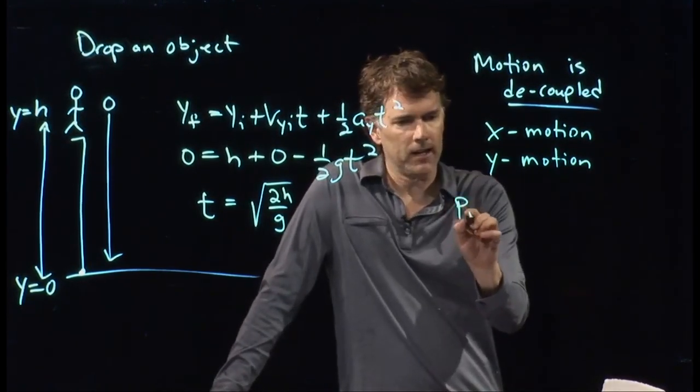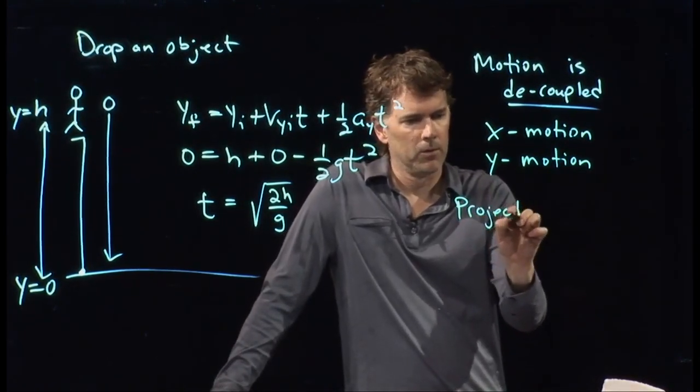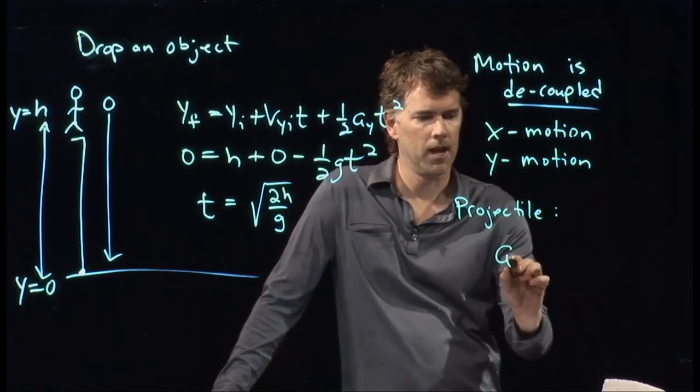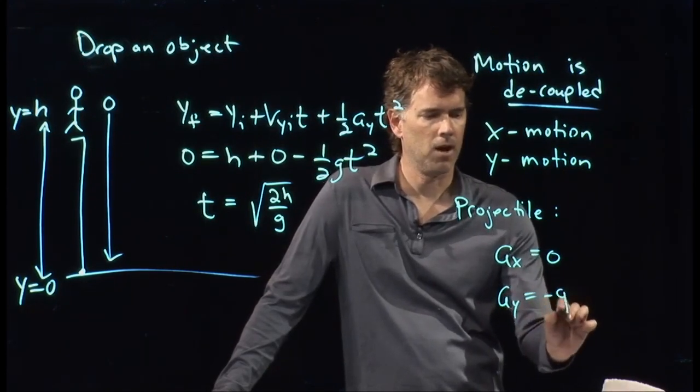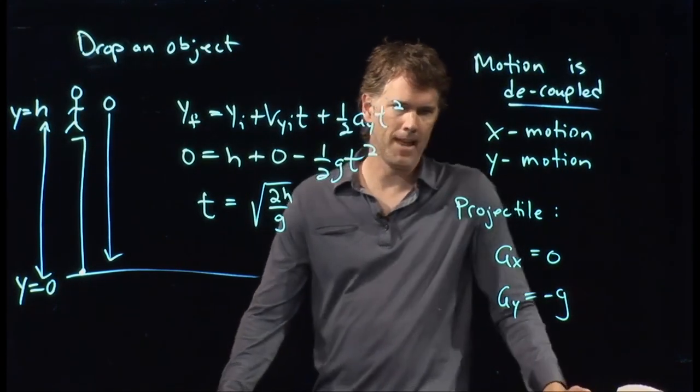And for our projectiles, we in fact knew the following. A sub x was equal to zero. A sub y was gravity, negative g.